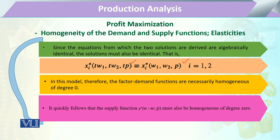In this model, the factor demand functions are homogeneous of degree 0. Since factor demand functions are homogeneous of degree 0 and they essentially determine the output supply function, we can also infer that our output supply function will also be homogeneous of degree 0.